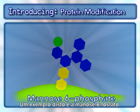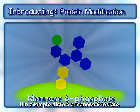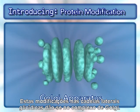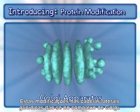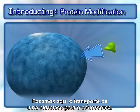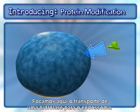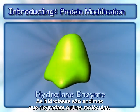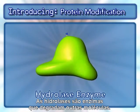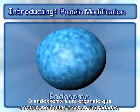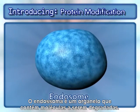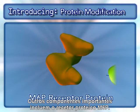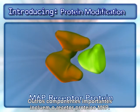One example of this is mannose-6-phosphate. These sugar side-chain modifications occur within the Golgi apparatus. We focus here on the delivery of a hydrolase enzyme to the endosome. Hydrolases are enzymes that degrade other molecules. The endosome is an organelle that contains molecules to be degraded. Other key components include the M6P receptor protein.